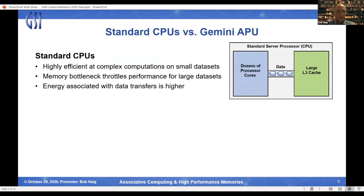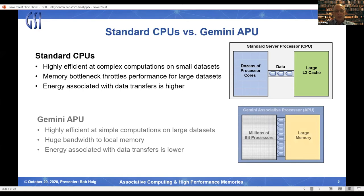Now let me start by looking at the primary issues that we intend to address with this new in-memory processor. Standard CPUs, with their traditional von Neumann architecture and dozens of processor cores, are highly efficient when performing complex computations on small data sets. However, they struggle with larger data sets due to the memory bottleneck imposed by the von Neumann architecture. Additionally, the energy required to transfer data between the CPU cores and the shared memory is high, due to the relatively long distances between the cores and the memory.